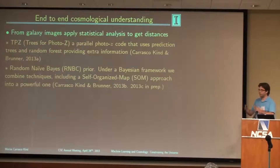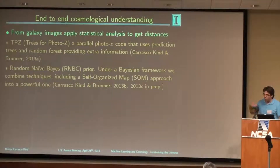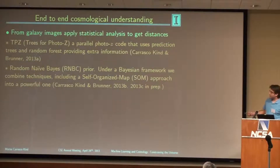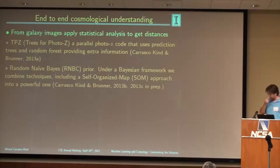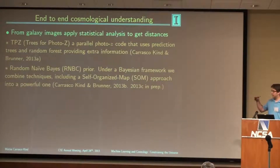We continue developing this because it's a machine learning algorithm, which is always limited by the training sample. Since you have some spectra, you can use that as training data for the algorithm, but you're always limited by that. So we are currently developing a second technique to go beyond the training set under a Bayesian framework. We're using a random naive Bayes classifier prior for this combined technique and also extending it to a self-organized map, which is unsupervised. Prediction trees and random forests are supervised techniques, while the self-organized map is unsupervised. We try to combine all of these to leverage the strengths and weaknesses of each technique and get a much more powerful predictor.